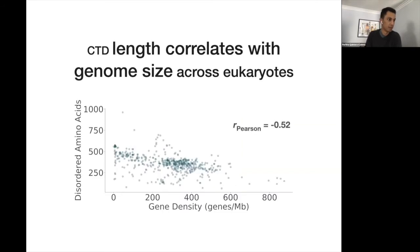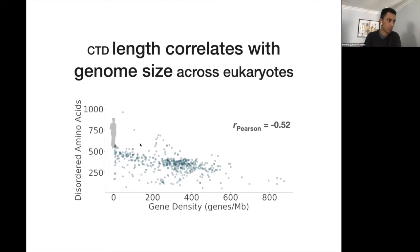In this plot, the x-axis shows gene density — humans are here with a very sparse, very big genome with a similar number of genes as C. elegans, for example. The y-axis is the number of disordered amino acids, most of which correspond to the CTD. There is a negative correlation between CTD length and genome size: organisms with sparse genomes have long CTDs, while smaller genomes have shorter CTDs — flies here, and yeast here.